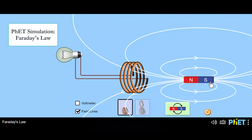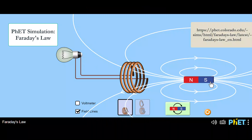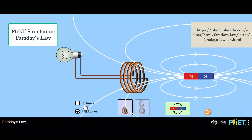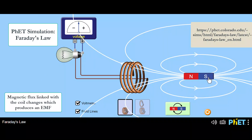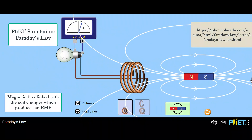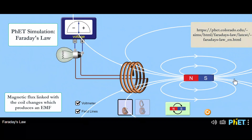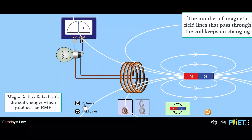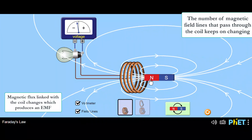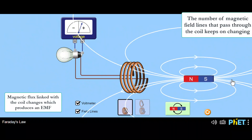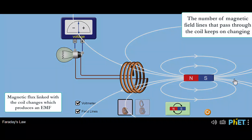To better understand it, let's look at a simulation. In this simulation, as I move the magnet closer to the coils, the magnetic flux linked with the coil keeps on changing. As the magnetic flux keeps on changing, an EMF is induced in the coil which then produces a current, and as a result the bulb glows. You may notice that when I move the magnet closer to the coil, the number of magnetic field lines passing through the coil keeps on changing, implying that the magnetic flux keeps on changing.